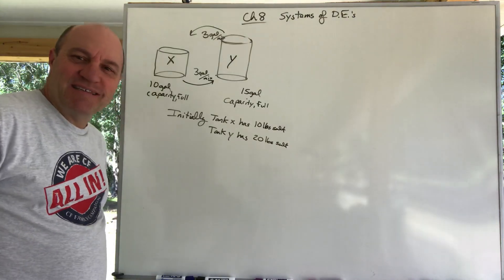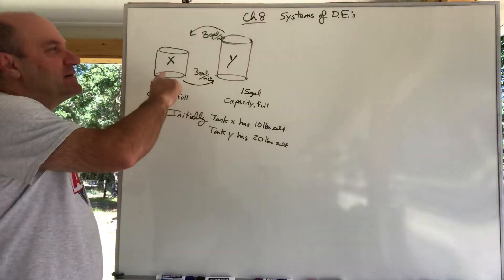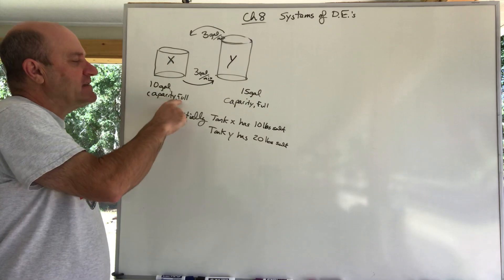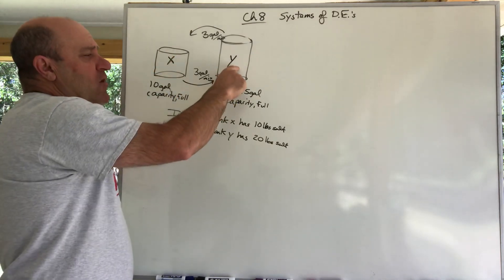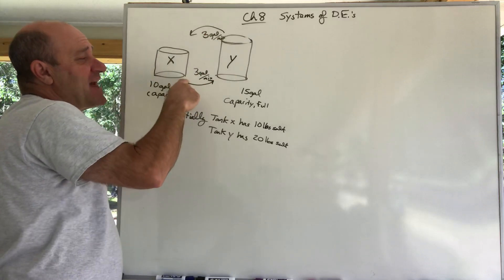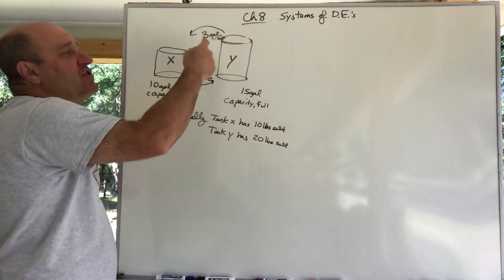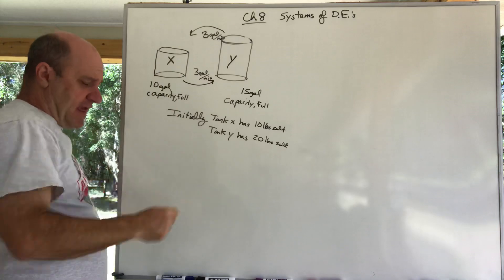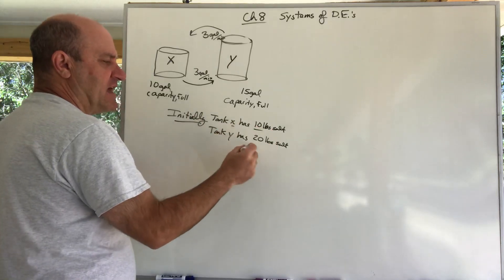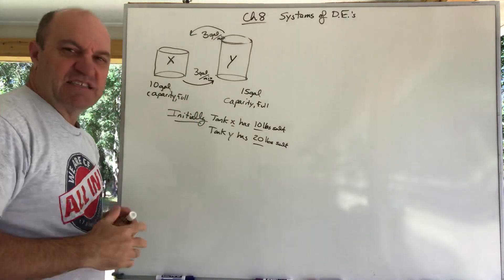Good morning, differential equations. Let's try this problem. I have two tanks: tank X and tank Y. Tank X is a little shorter because it's just got a 10-gallon capacity, and it's full of water. Tank Y has a 15-gallon capacity and it's full of water. 3 gallons a minute is flowing out of tank X into tank Y, and 3 gallons a minute of the well-stirred mixture is flowing out of tank Y into tank X. Initially, tank X has 10 pounds of salt and tank Y has 20 pounds of salt. I'm going to try to set it up as a system of differential equations.